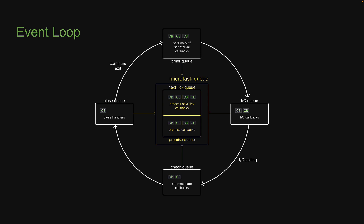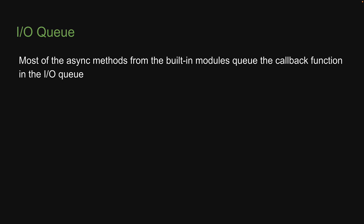A friendly reminder that you should have watched the previous 3 videos before proceeding. To queue a callback function into the IO queue, there are a number of methods. Most of the async methods from the built-in modules queue the callback function in the IO queue. For this video, I will be using the readFile method from the FS module. Let's head back to VS Code and run our next experiment.